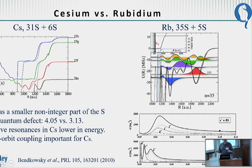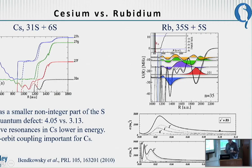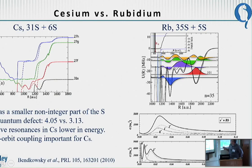The real potential curves are much more complicated because there are other effects. Those effects mean that not every generic Rydberg atom behaves the same — molecules for different types of atoms are different, and we've learned a lot by studying things like cesium, rubidium, and strontium. I've shown cesium potential curves here and rubidium potential curves over here: n=35S for rubidium, and cesium 31S. You can see they're quite different — there are lots of avoided crossings in cesium but not in rubidium. This is because the energy structure of the two atoms is different.